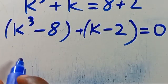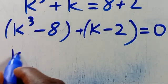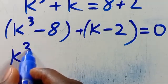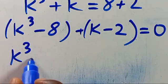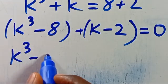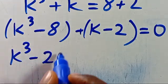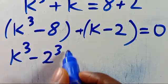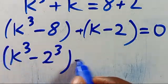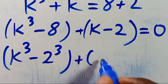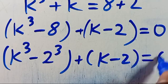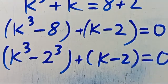So from here, we have k to the power of 3, and let's write 8 as 2 to the power of 3, then plus k minus 2, then everything equals 0.